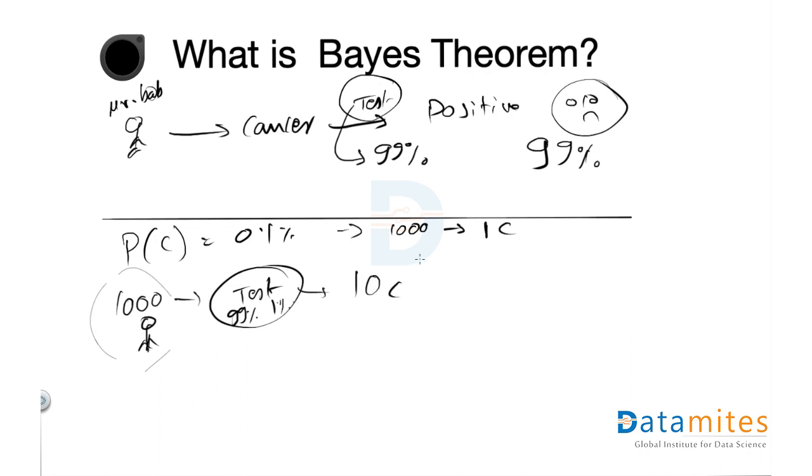But that's not true because from general statistics perspective, you have 0.1 chance of getting cancer, so out of a thousand, one should have cancer. So out of this, actually one has cancer and nine were mispredicted, so nine not cancer.